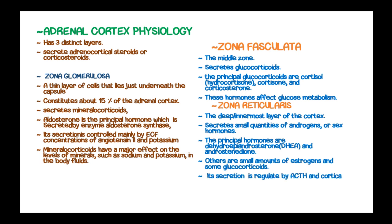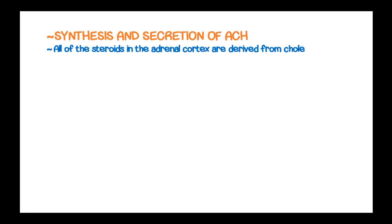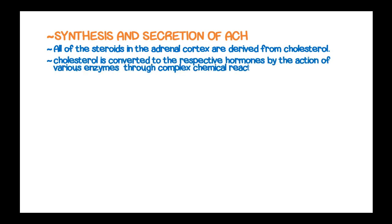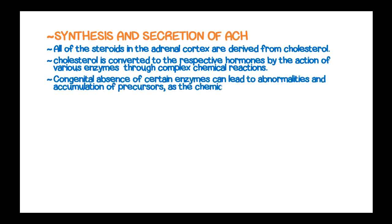Its secretion is regulated by adrenocorticotrophic hormone and corticoandrogenic-stimulating hormone released from the pituitary gland. All of the steroids in the adrenal cortex are derived from cholesterol, and cholesterol is converted to the respective hormones by the action of various enzymes through a complex chemical reaction. Congenital absence of certain enzymes leads to abnormalities and accumulation of precursors, as the chemical reaction cannot proceed beyond a certain point.